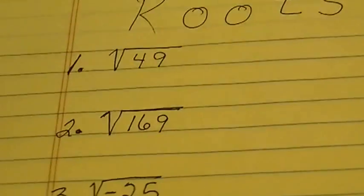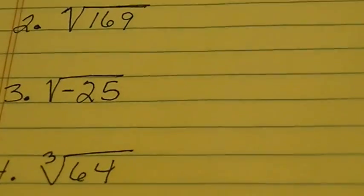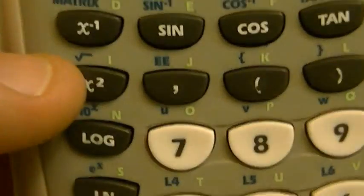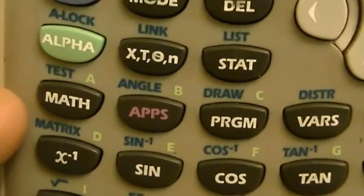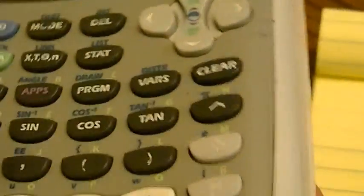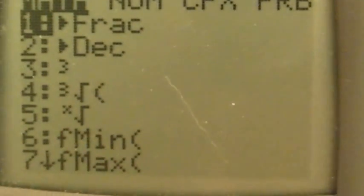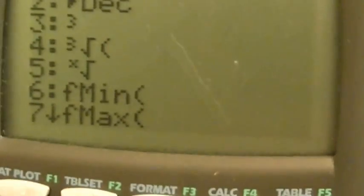The trick on this calculator is finding where the hidden things are located. For square roots, use the front of the calculator: hit second, x², and it gets your square root radical. For cube roots, hit the MATH button and use number 4 from the list. For any root higher than 3, such as a fourth or fifth root, punch the root number first, then hit the MATH button and go with option number 5, which has the x in front of the radical. Good luck!